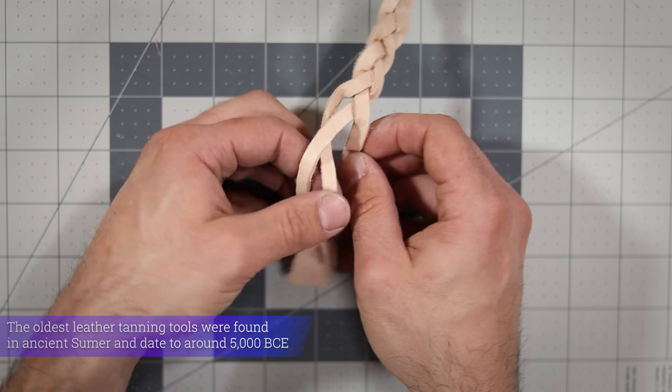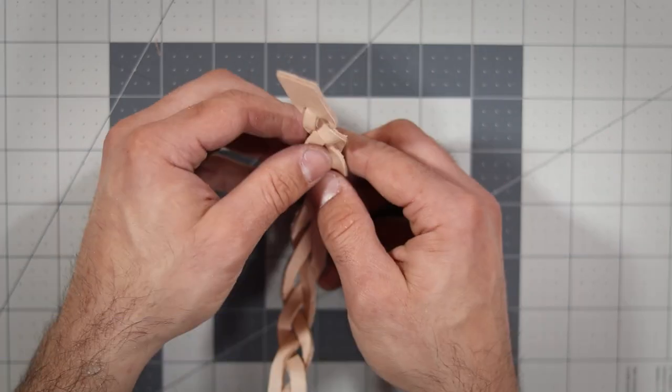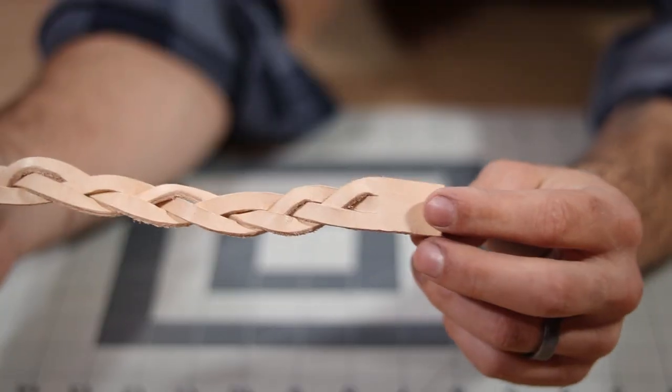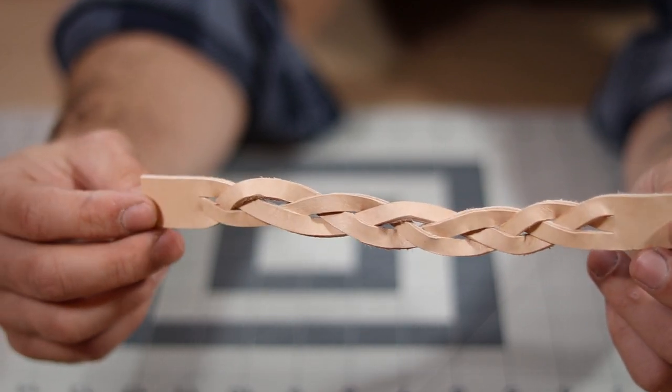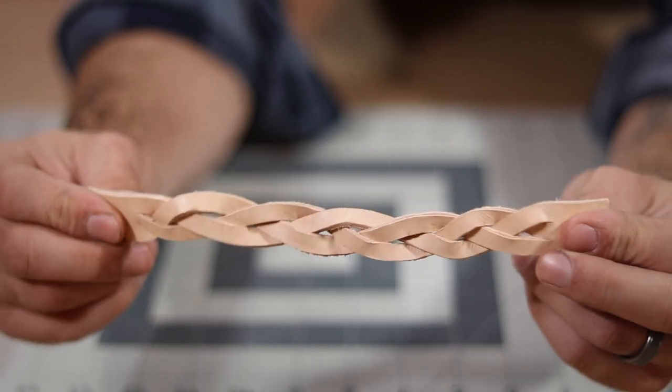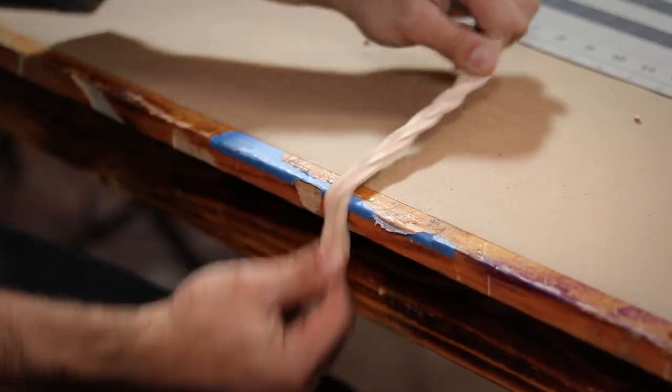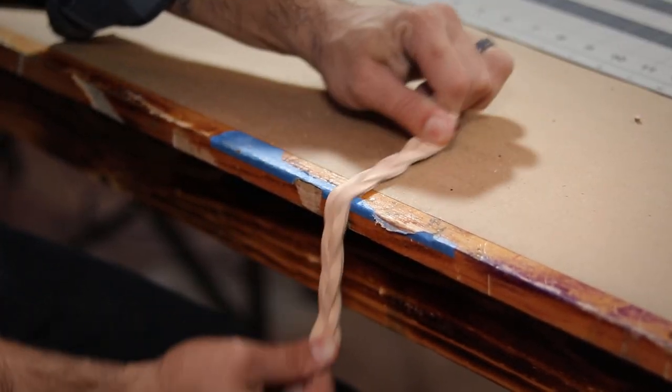Okay, now just take some time and spread that weave all along the length of your strap until it's mostly even. To lock the weave tighter and to make it more uniform, just rub it back and forth along the edge of your table until it settles into position.